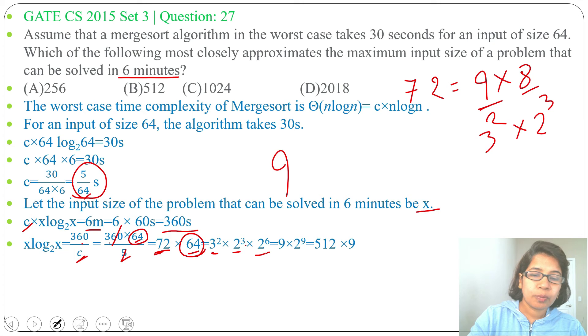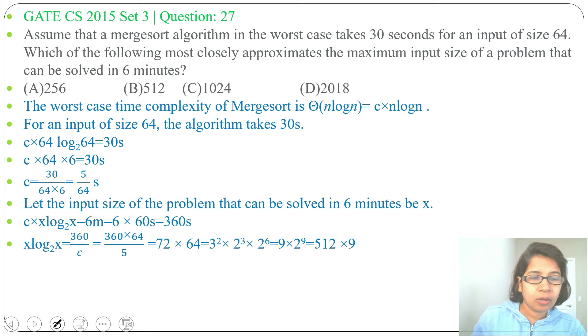So we got 3² that is 9, 2³ × 2⁶ that is 2⁹. We got 9 × 2⁹, and 2⁹ equals to 512, so we can write 512 × 9.